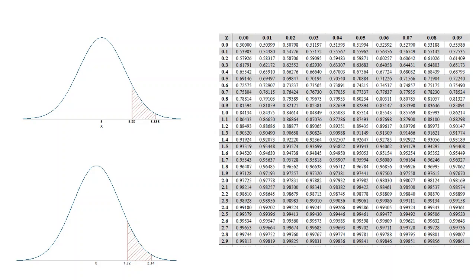Let's do one more example. When measuring the dimension of a circle, it was found that it follows a normal distribution with a mean of 5 and a standard deviation of 0.25. So what proportion of dimensions are between 5.33 and 5.85 mm? Before we solve this question, it's always a good habit to first write out important information. So we have a mu of 5 and a sigma of 0.25, and we are looking for the proportion of individuals between 5.33 and 5.85.